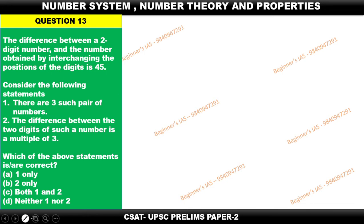So let us solve this problem. The difference between two-digit number and the number obtained by interchanging the position of the digits is 45. Now first of all, understand the concept of two-digit number: unit place and then 10th place.